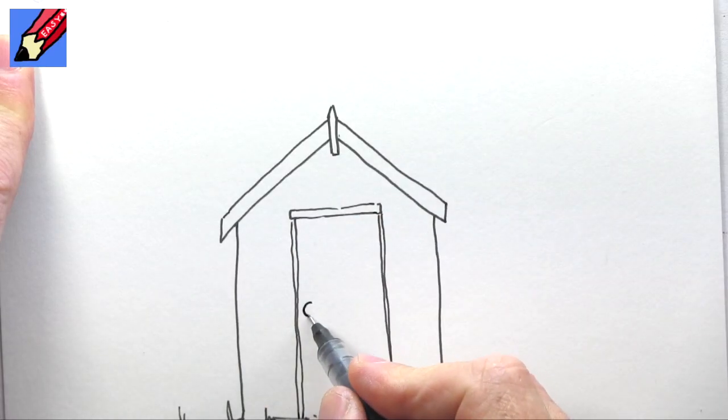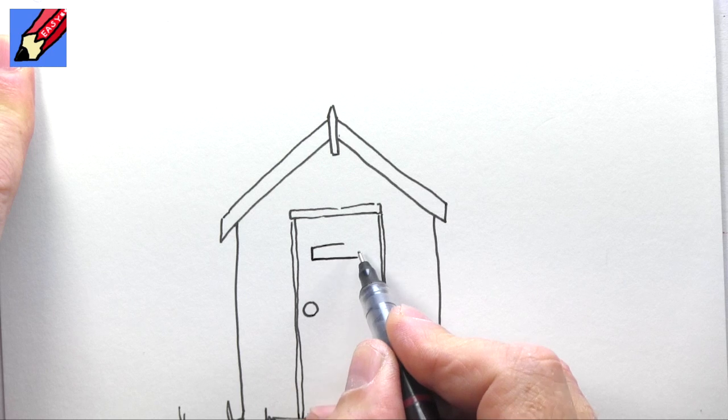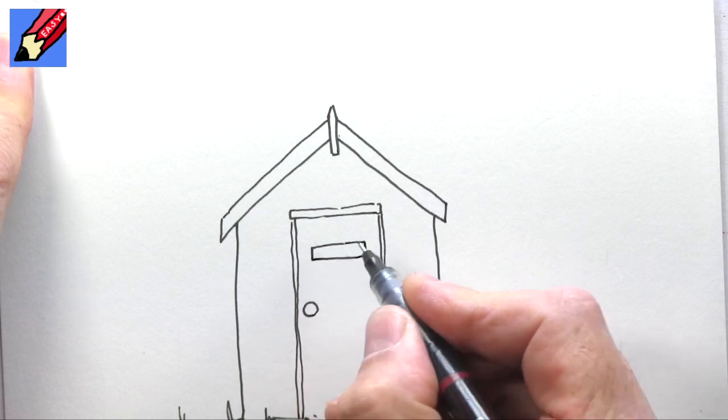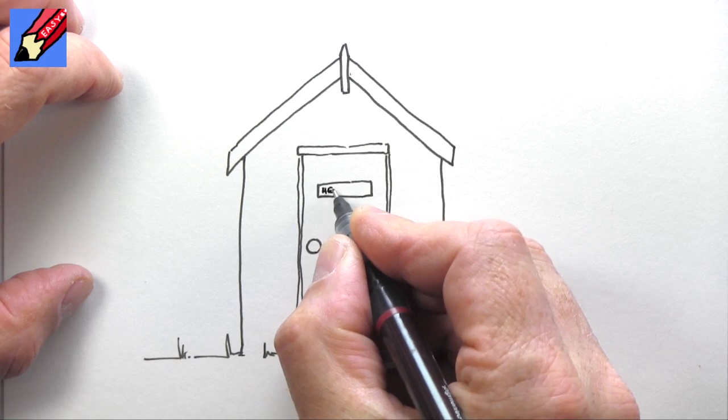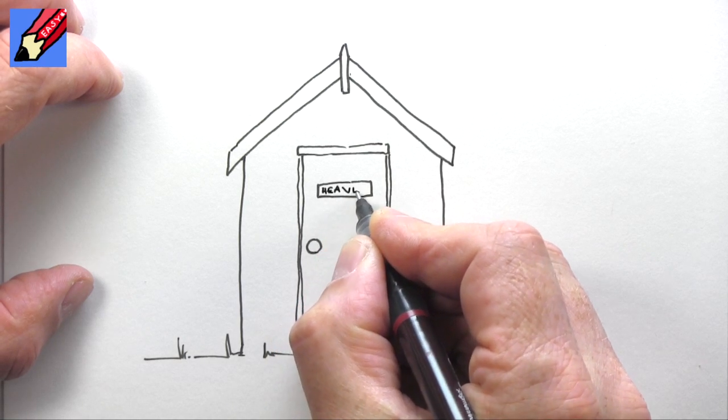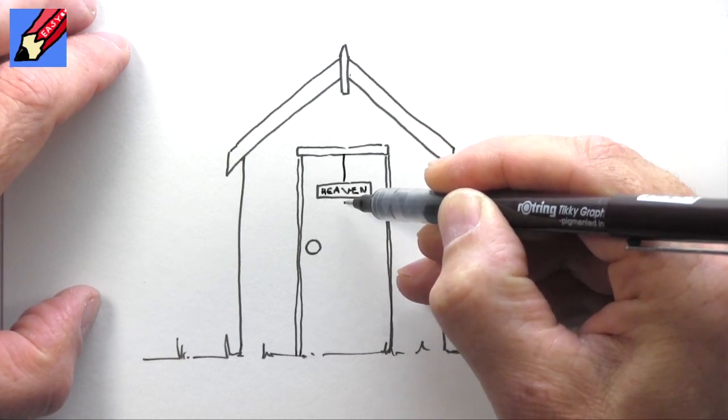This is the door. We're going to put a little lock on there and a little sign on the door saying, what should we call it, heaven - being by the seaside on holiday. Let's split that down the middle.